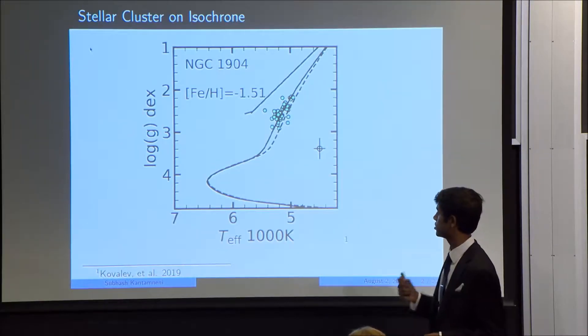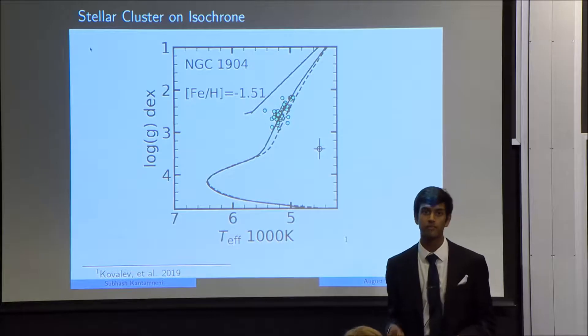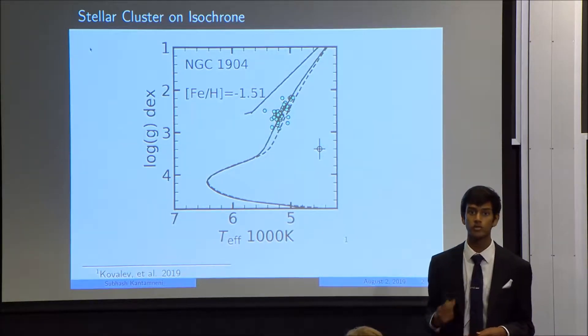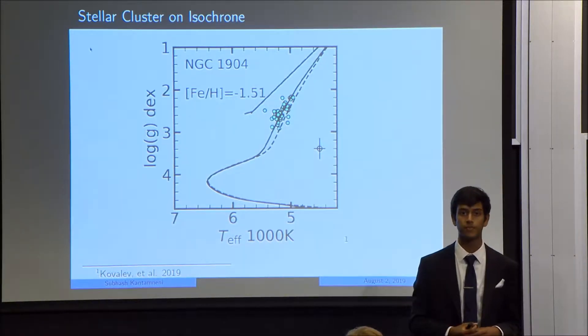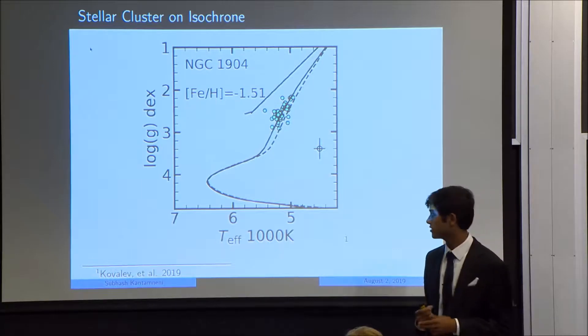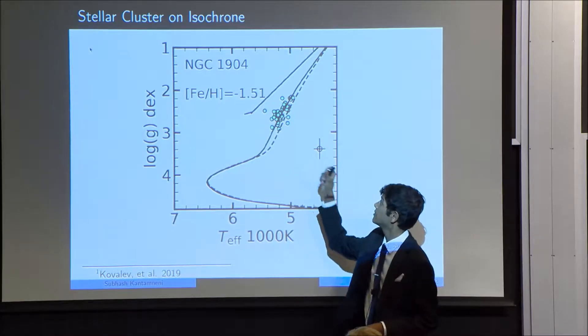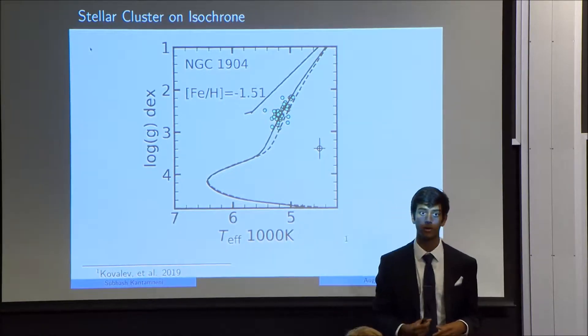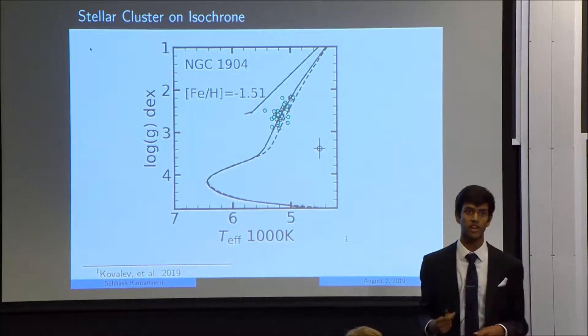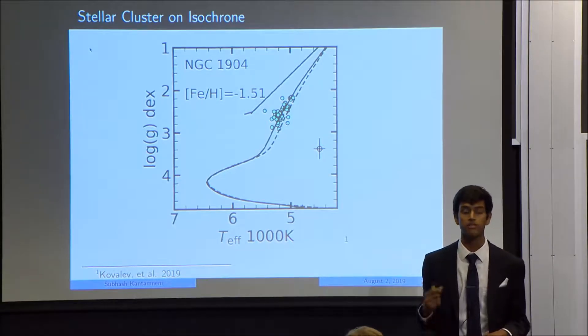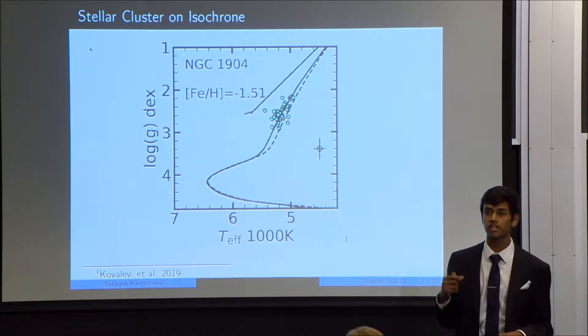Stellar clusters generally consist of stars that were formed around the same time from the same interstellar dust, which means that they have the same age and composition. If we plot the stars from a stellar cluster on a graph with these axes, we should get an observed isochrone, which is shown here by these green dots for the stellar cluster NGC 1904. If we can match this observed isochrone up to a theoretical isochrone of known age, we can effectively deduce the age of the stellar cluster.